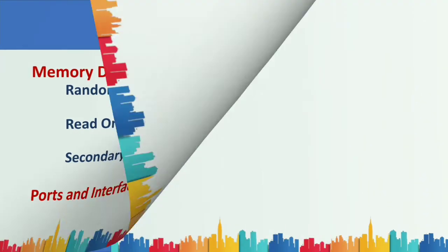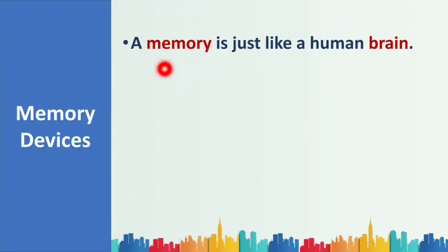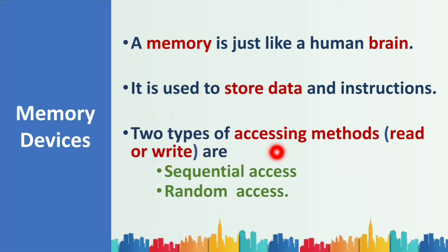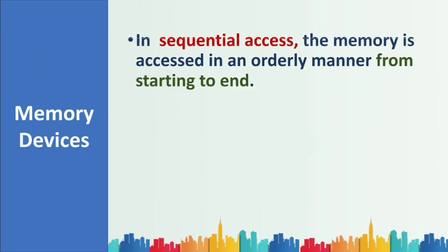Let's start with memory devices. A memory is just like a human brain — it is used to store data and instructions. There are two types of accessing methods: to read or write. One is sequential access, where memory is accessed in an orderly manner from start to end.